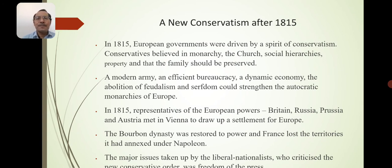In 1815, representatives of the European powers — Britain, Russia, Prussia, and Austria — met in Vienna to draw up a settlement for Europe. The Bourbon dynasty was restored to power and France lost the territories it had annexed under Napoleon.